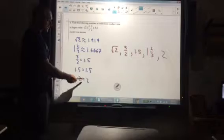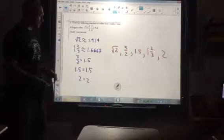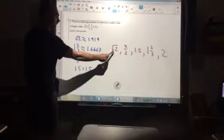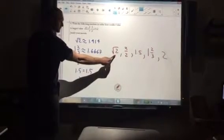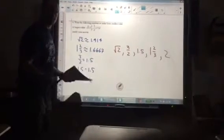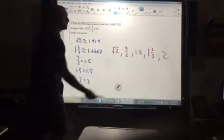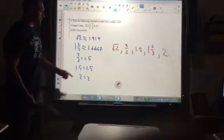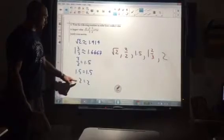So now that they're all decimals, I can arrange them from smallest to largest. So that means radical 2, 1.414, comes first. 3 halves and 1.5 are actually equal, so you could put those in any order. 1 and 2 thirds was the 1.66, and then finally we get to the largest number, which was 2.